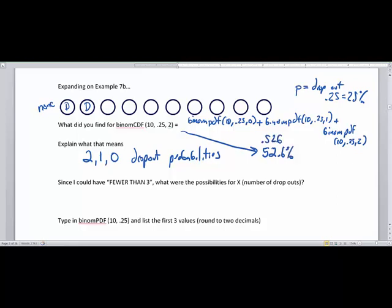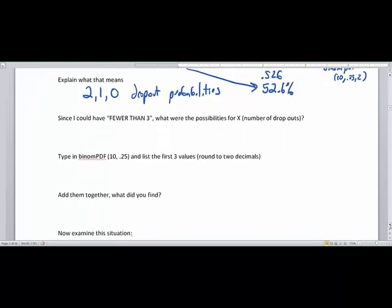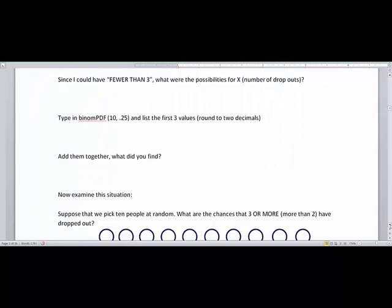So let's write that down. The answer to this problem was 52.6% or 0.526. Okay, so since I could have had fewer than 3, the possibilities were 2, 0, and 1 dropouts, right? Okay, so 2, 0, and 1. Well, I'll just write 2, 1, and 0.